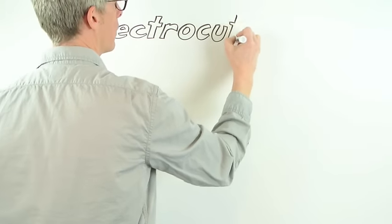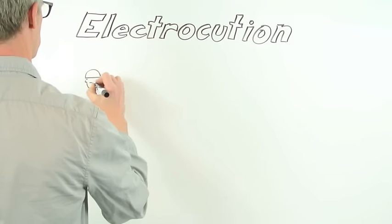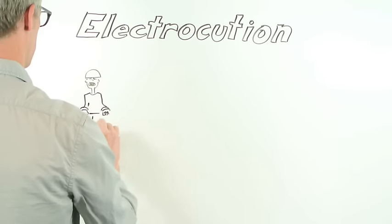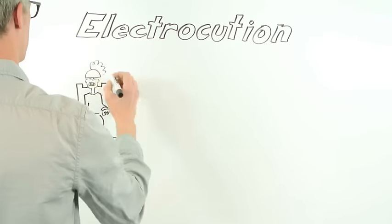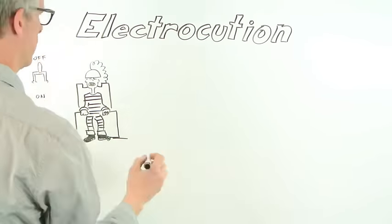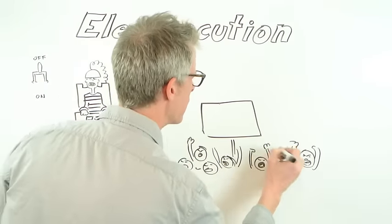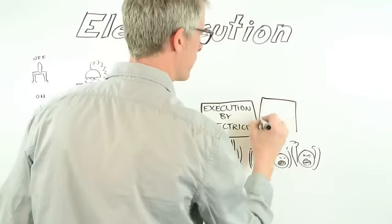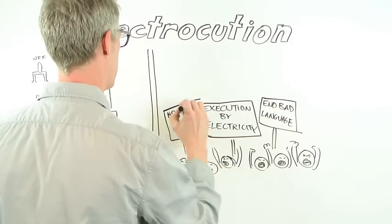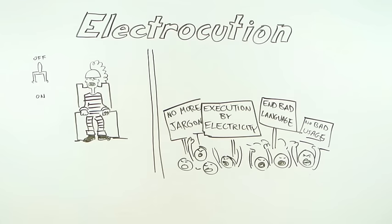Like advertorial, electrocution started as a blend of two words: electric execution. It caused a great deal of anger around the turn of the century. Not as a method of capital punishment—it was considered much less barbaric than hanging—but as a word. Critics called it bad and incorrect, and that 'electrocution by electricity' was the only proper term for it.